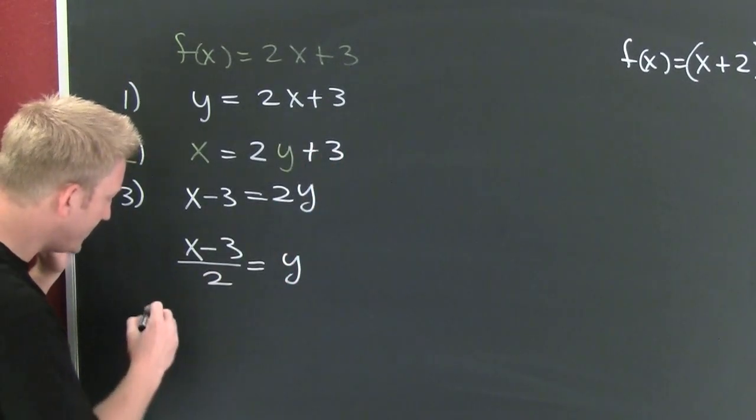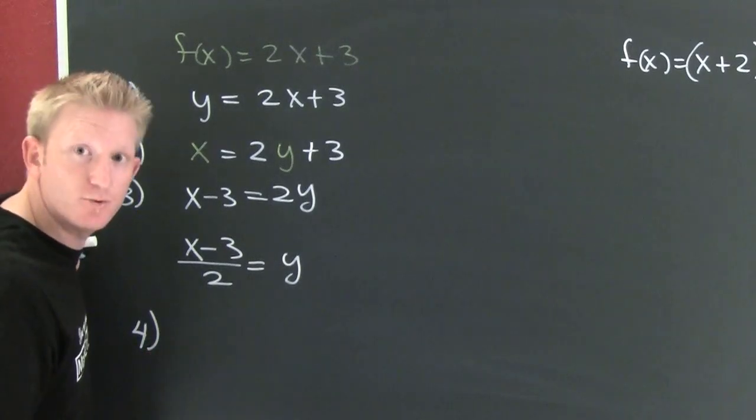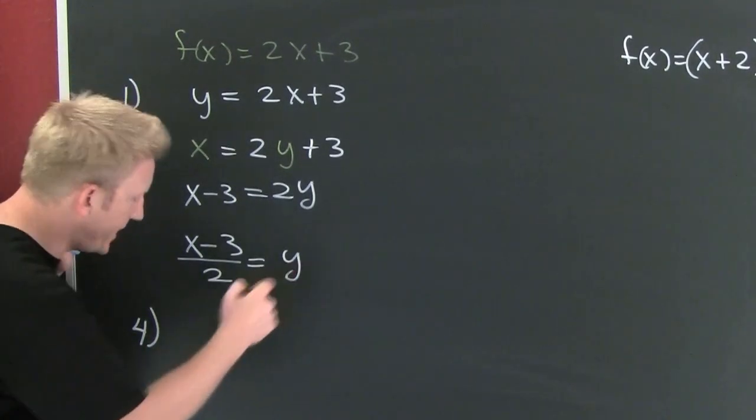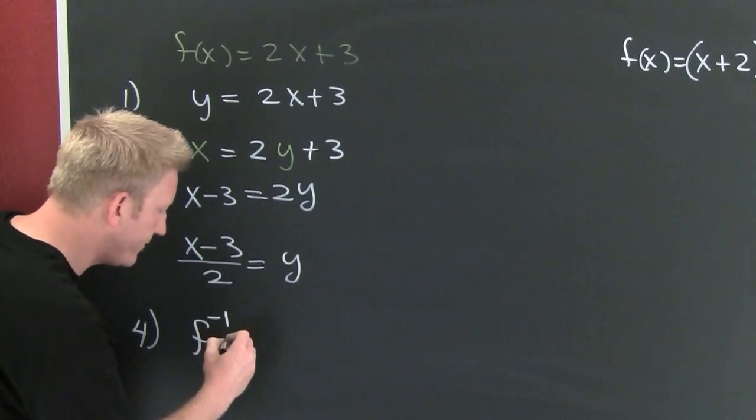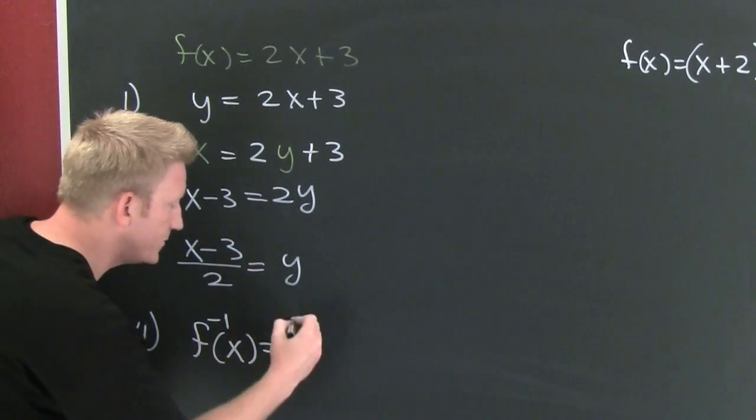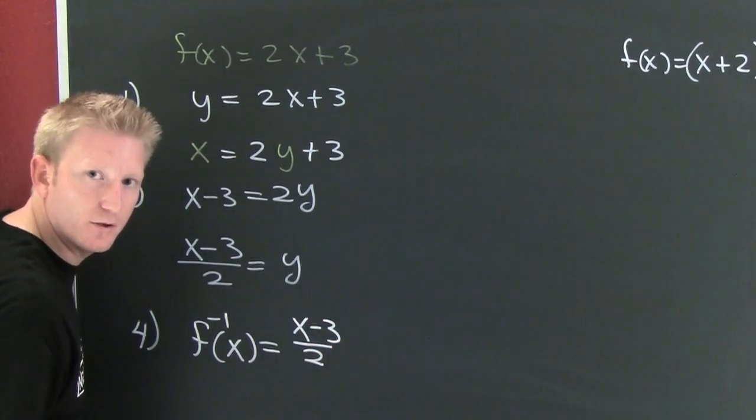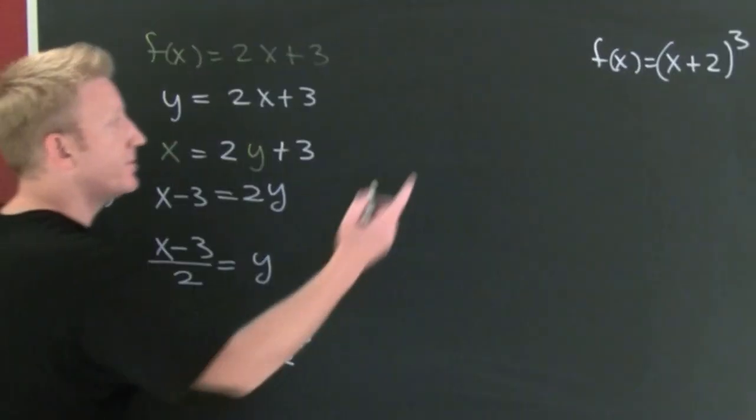And finally the fourth step. I'm taking points right here because this is the most commonly forgotten step. You need to interchange y with f inverse of x. And then that's equal to x minus 3 over 2. Moving on to my next one.